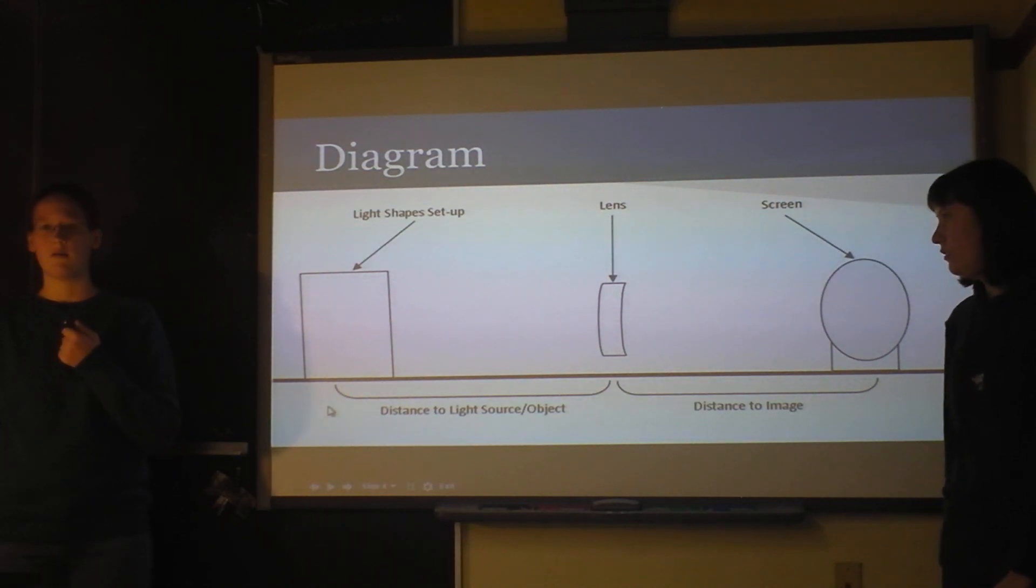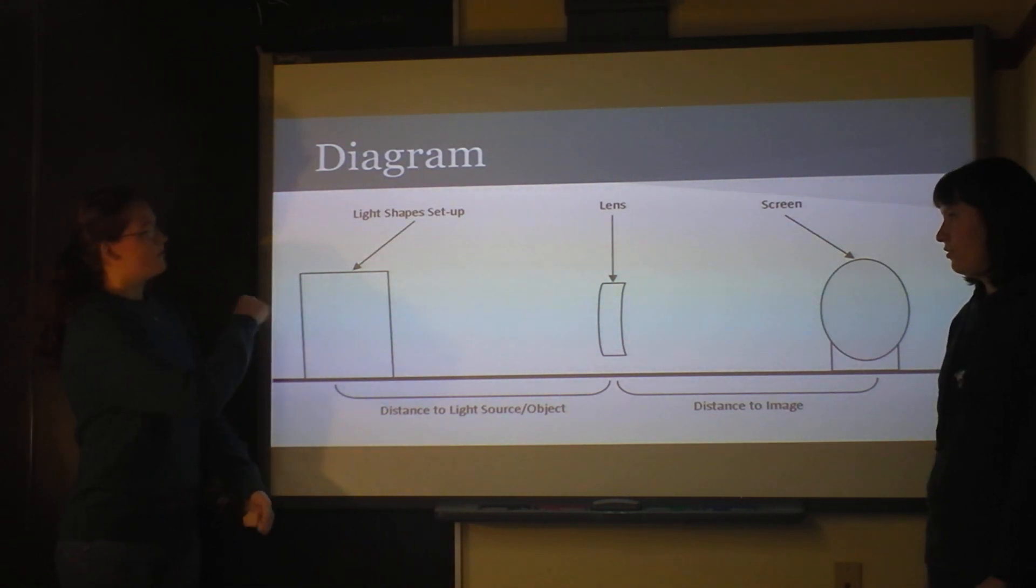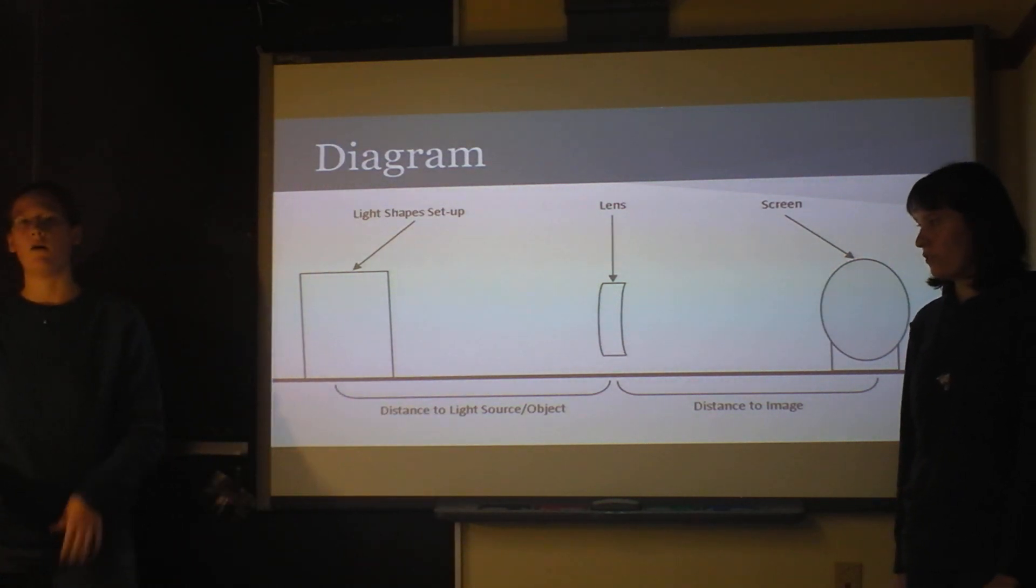So, this is our experimental setup. We used the optics bench thing that we used last year. So, this is a light box, and it has a little image, and we used a four. So, this was a little lighted up four. And so, we turned it on, and we shone it through the lens and onto a screen or the wall on some of the lenses that had really long focal points.